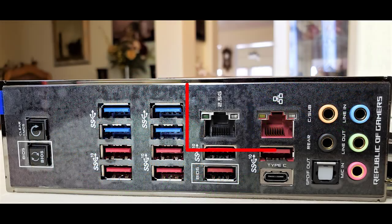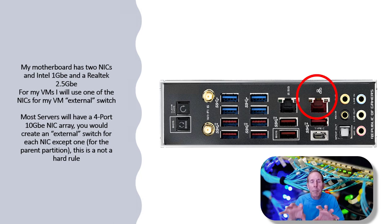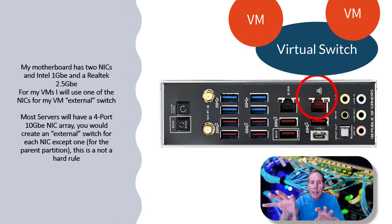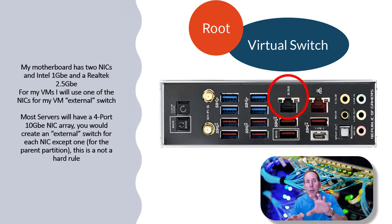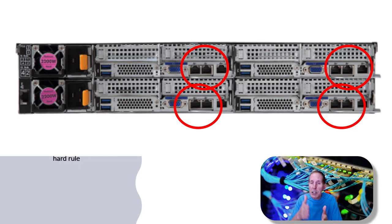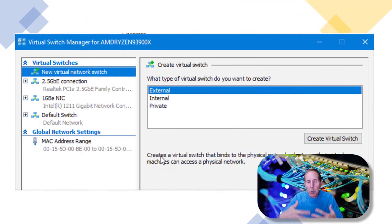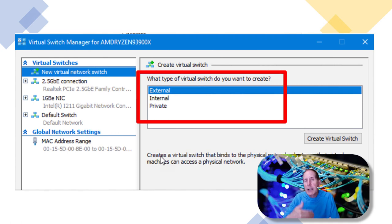If that's a 100 gigabit optical adapter, probably okay — but if it's just a gigabit NIC, that's going to be a problem. In my case I've got two network cards. I want to split my parent/root partition on one NIC and my virtual machines on another. My motherboard has a 2.5 gigabit and an Intel 1 gigabit NIC. I want to create a virtual switch for both and put my virtual machines on one and my root partition on the other. Most servers have four-port switches built in, making it extremely flexible. Make sure the virtual switch is external if you want internet access.